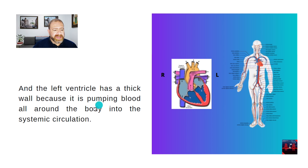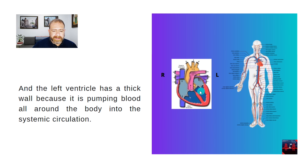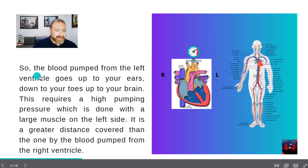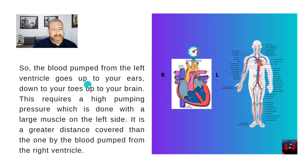The left ventricle has a thick wall because it is pumping blood all around the body into the systemic circulation. The blood pumped from the left ventricle goes up to your ears, down to your toes, up to your brain. This requires a high pumping pressure, which is done with a large muscle on the left side.